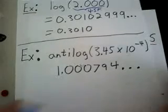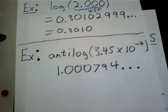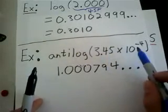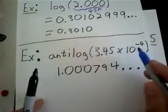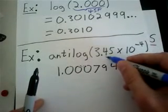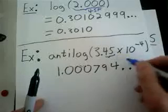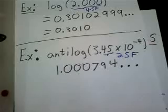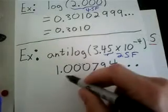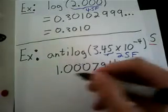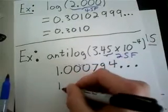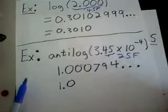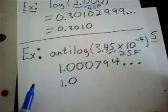Now we focus on significant figures. Since this number is already a logarithm — you're just taking the anti-log of it — we're going to look at the mantissa, and it looks to me like the mantissa here has two significant figures. So, that means we're going to keep two significant figures in our answer. Our answer then becomes 1.0. Pretty straightforward. Hopefully this helps a little bit, and good luck.